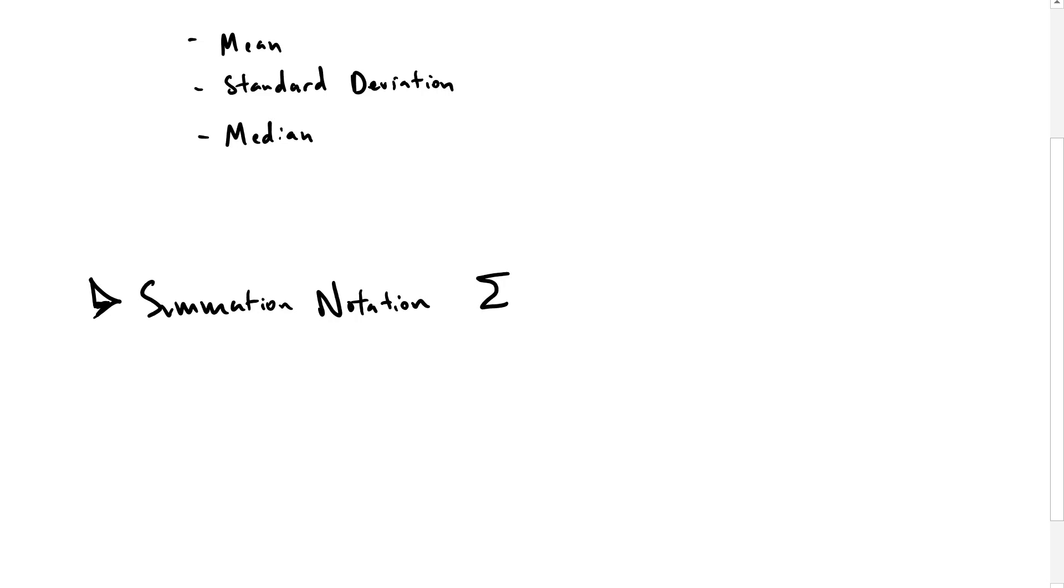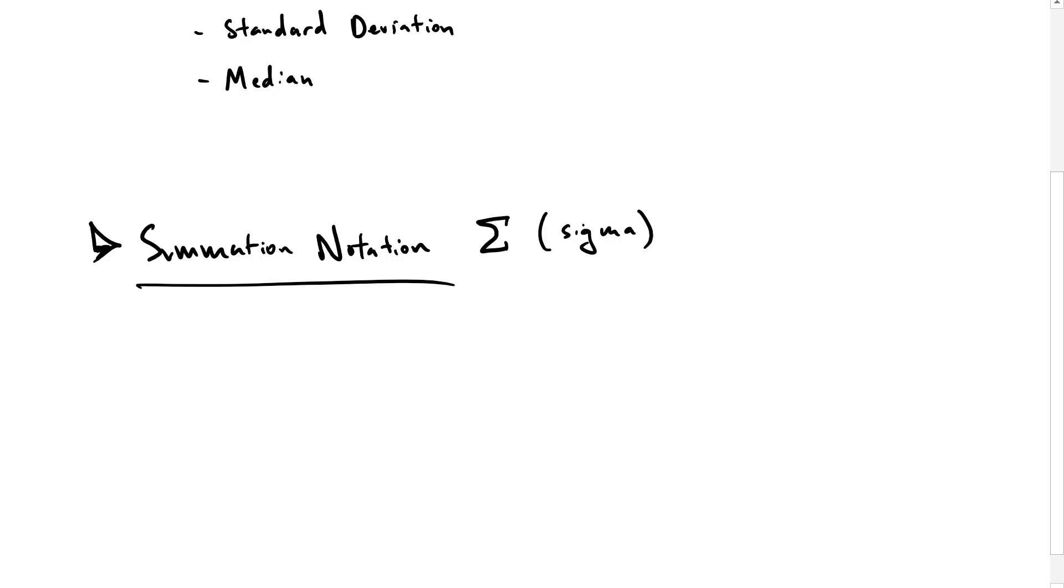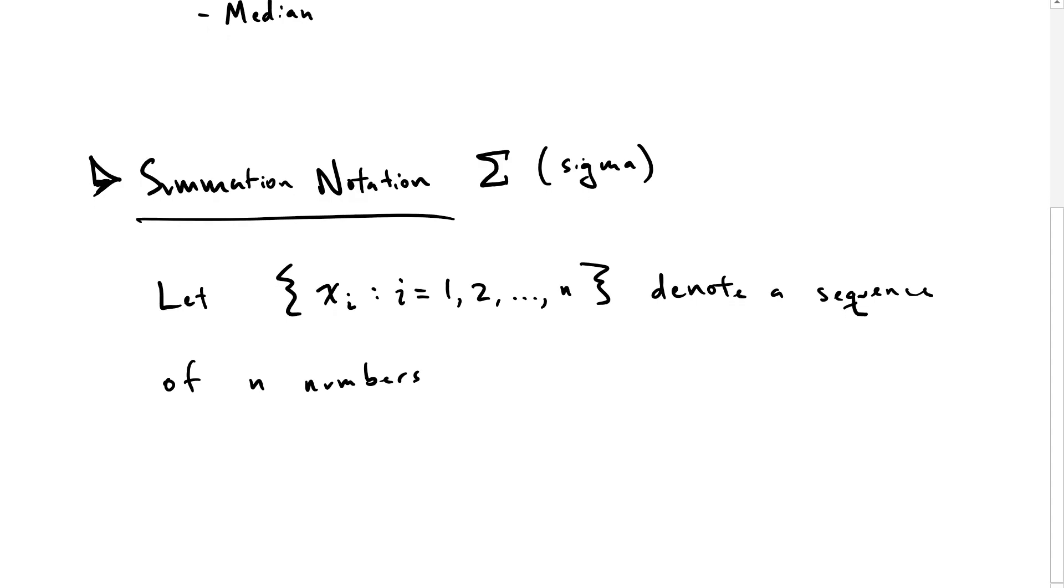Let's start with the summation notation, using the Greek letter sigma, capital sigma. We're going to have a series of data. Let xi represent a sequence where i is equal to 1 through n, denoting a sequence of numbers.